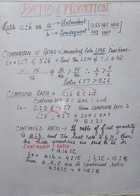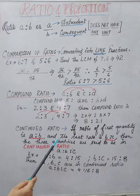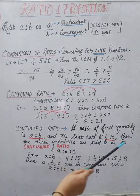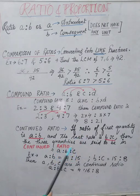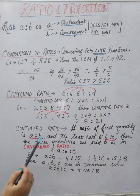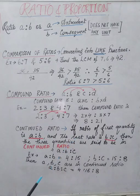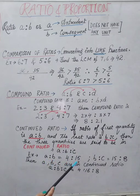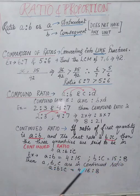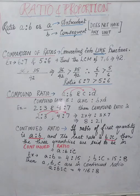Next is continued ratio. Continued ratio is when the consequent of the first ratio is the same as the antecedent of the second ratio. If the first ratio is a:b and the second is b:c, then a, b, and c are in continued ratio and we write it as a:b:c. For example, if a:b = 4:15 and b:c = 5:8, then a, b, c are in continued ratio because the b term is common to both.